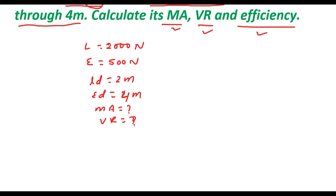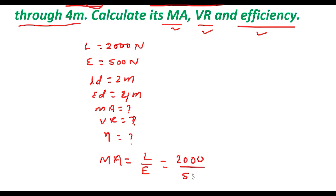We know that mechanical advantage (MA) is given by load divided by effort. So we have load 2000 divided by effort 500. When we calculate it, 2000 divided by 500 becomes 4. So mechanical advantage is 4.